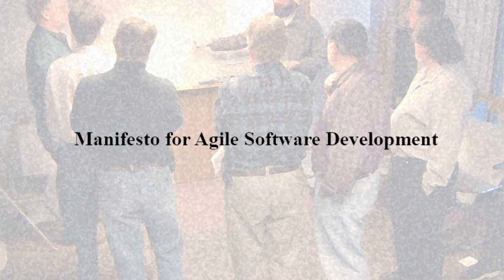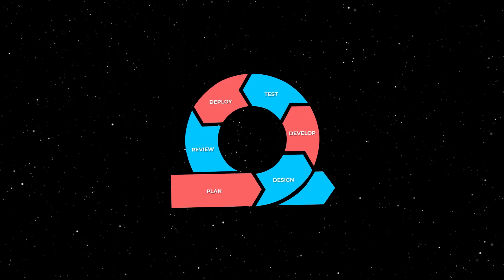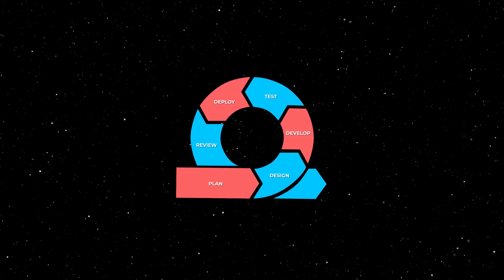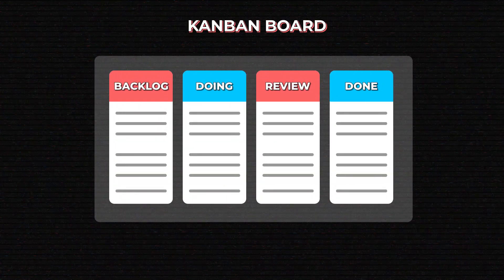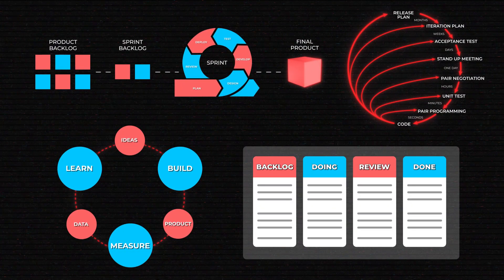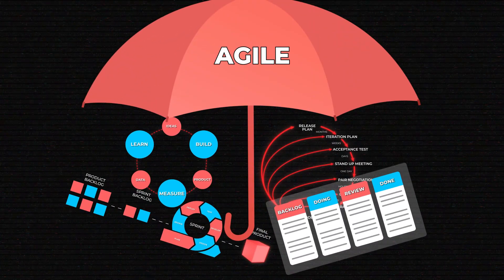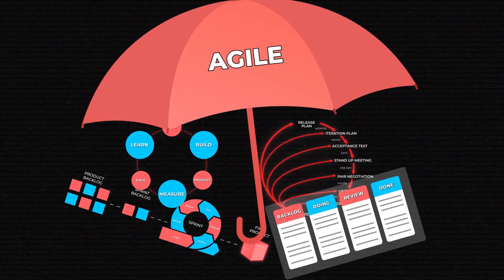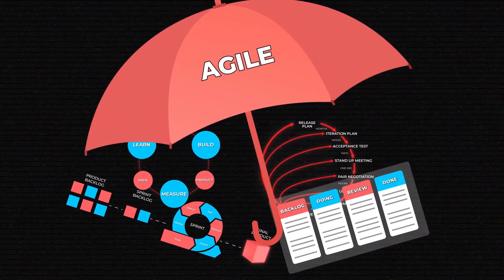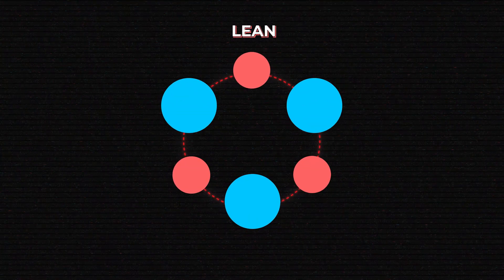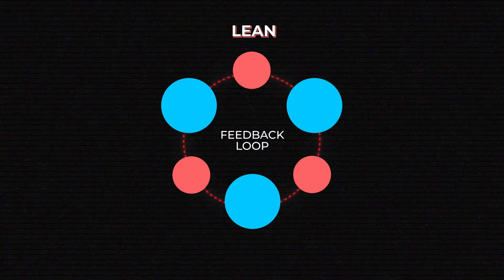While originally Agile was more of a philosophy, today it has loads of specific tools and techniques. Such frameworks as Scrum, Lean, Extreme Programming, and Kanban are also classified as Agile approaches. Even though they existed before the Agile Manifesto was formulated, they now fall under the Agile umbrella. Apart from Scrum, there's a Lean methodology that focuses on eliminating waste, and at its core is a feedback loop for testing your assumptions.